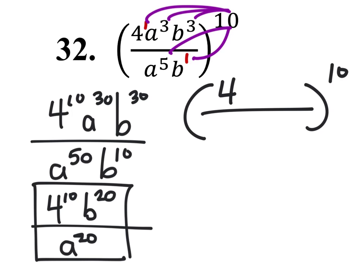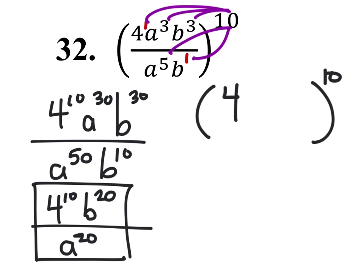We've got 4. Then I've got a to the power of 3 minus 5, and b to the power of 3 minus 1.